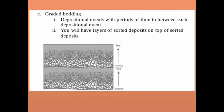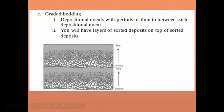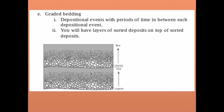This is called graded bedding. Imagine an area that experiences a flood — water comes down the river, enters the large body of water, and you get vertical sorting: large particles settle first, then smaller ones. The following year another flood deposits another layer — again large particles then finer particles. If you dug in this area, you'd find fine particles at the top, getting coarser as you go down, which makes sense for a single depositional event.